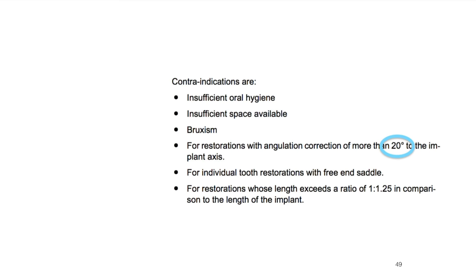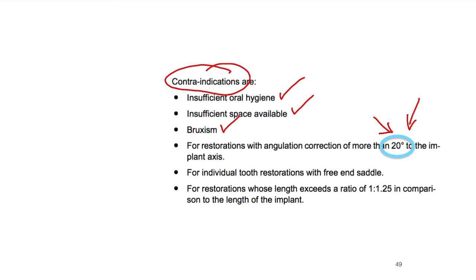Here are the contraindications. Insufficient oral hygiene — you've got to make sure your patients have good oral hygiene. Insufficient space — if there's collapse of the arch or ground-down teeth, you've got to make sure you have enough space. Bruxers — this is a relative contraindication, but it is a contraindication. And angulation correction of more than 20 degrees to the implant axis. So if you've got correction of more than about 22.5 degrees, that's a no-go.